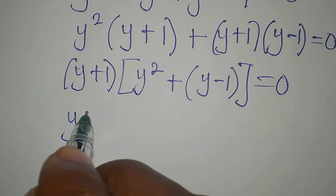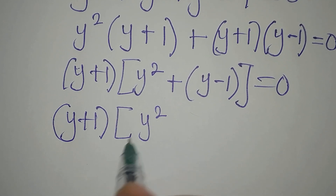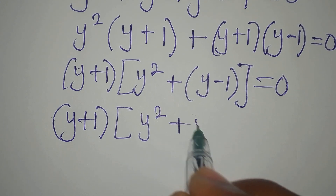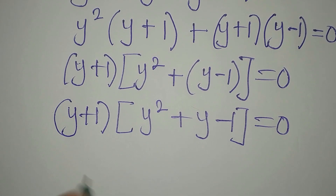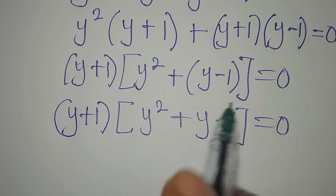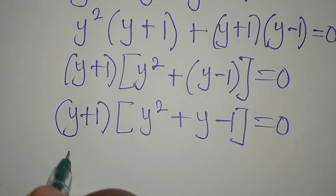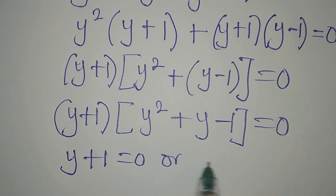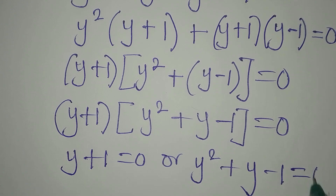So we have (y plus 1) here, and from here I have y squared. We can open this bracket to get plus y minus 1. This is equal to 0. So we are now having two brackets: (y plus 1) times (y squared plus y minus 1) equals 0. Either of them must be 0. So either y plus 1 equals 0, or y squared plus y minus 1 equals 0.